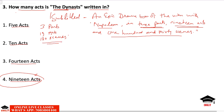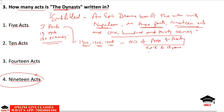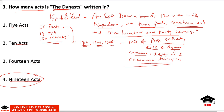The three parts of The Dynasts were published in 1904, 1906, and 1908 respectively. It is an extraordinary mixture of prose and poetry, epic and drama, narrative, theatrical, and cinematic technique — a complete package of everything.